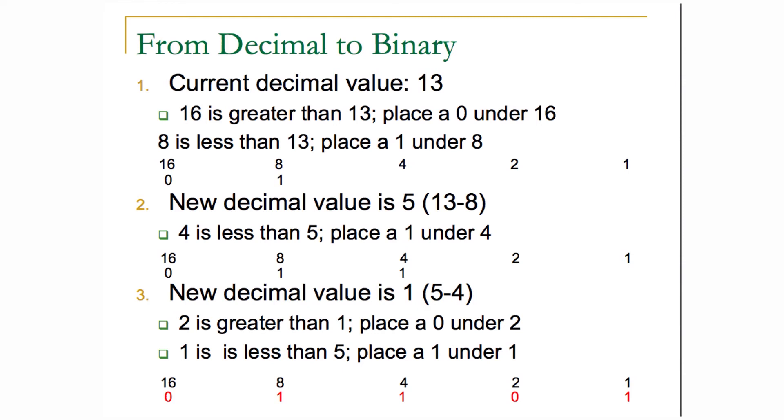Five compared to four, well four is obviously less, so I place a one underneath the four and subtract four from five to get one. So the new decimal number I'm trying to solve is one, and I just left the power of four. In this case, I compare two to one. Two is greater, so I place a zero underneath the two, and then one is less than or equal to one, so I place a one underneath the one.